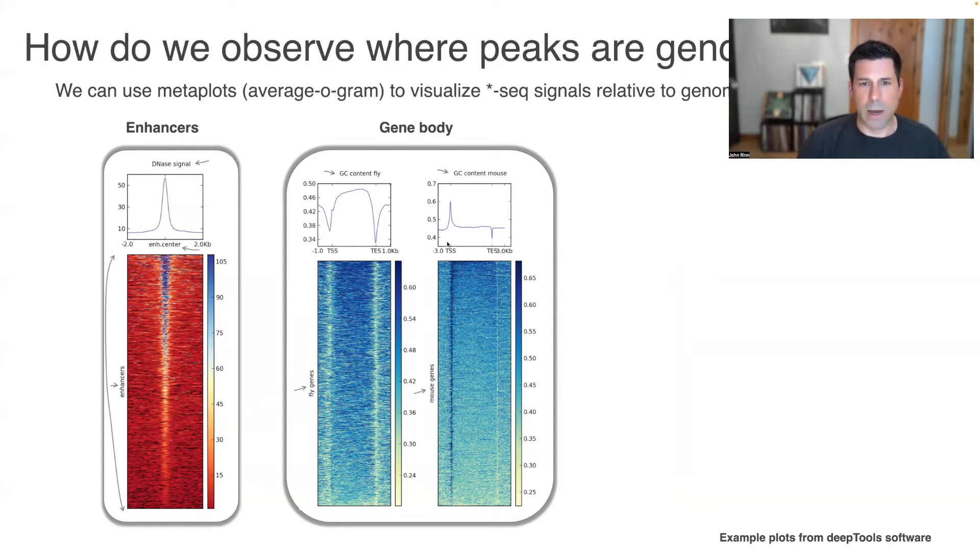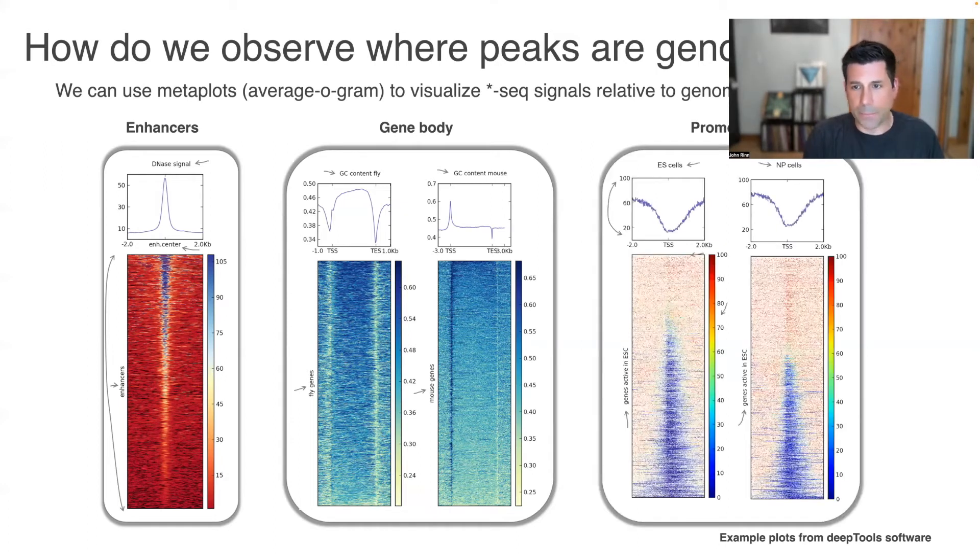You can see this pattern where it dips down, and the opposite one here, where the average of the signal is coming from here. These average-o-grams or metaplots tell you, in a visual way, can summarize a lot of information. You have to also remember that they are summarizing a lot of information, and so a lot is missing from the actual plot.